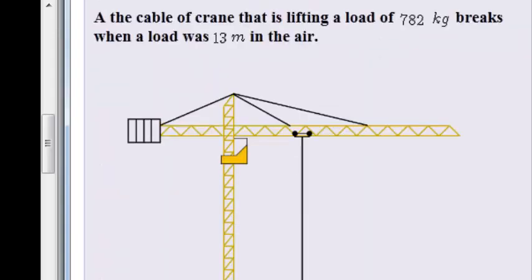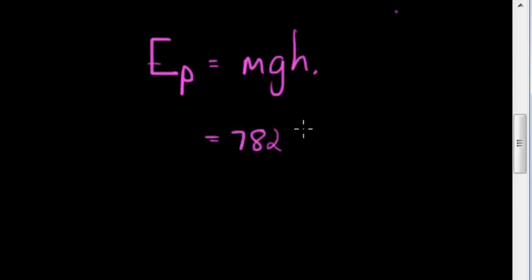Okay, so it's not a very difficult question because potential energy is simply mass times gravity times height. Since we have the mass 782, we have gravity is normally, let's see, do they tell us what g is? They don't, so we assume it's 9.8.